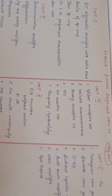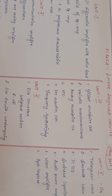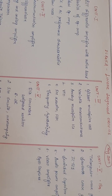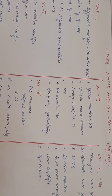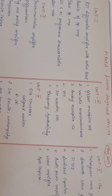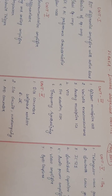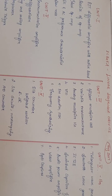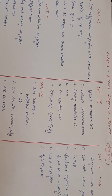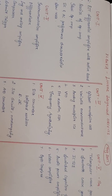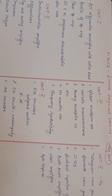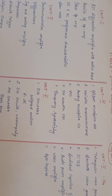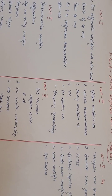The 3rd unit covers Gilbert Multiplier Cell, Variable Transconductance, Analog Multiplier ICs, VCO, FM Detection, FSK and Frequency Synthesizing. FM Detection and FSK are used in communication. This completes the 3rd unit.